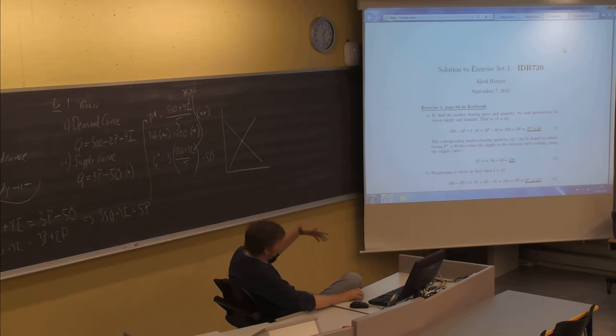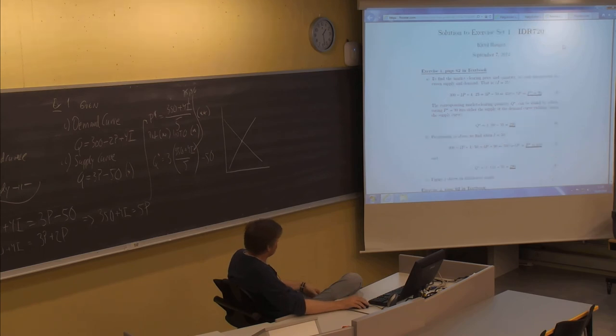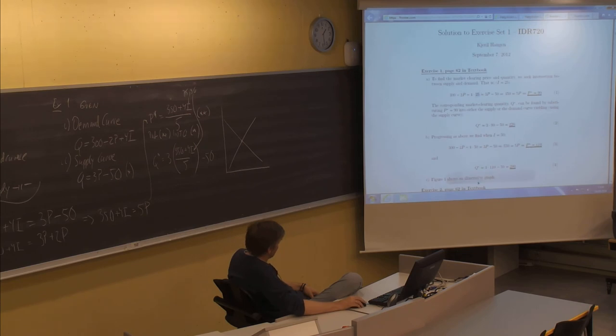Then I do the second step in the same way. In B here, progressing as above, we then just substitute 50 instead of 25. Then we get a different solution here. It turns out that the P star is 110, or 110,000 dollars to be embarrassingly correct. And Q star is found just by entering P star again in the supply curve, and it turns out to be 280.